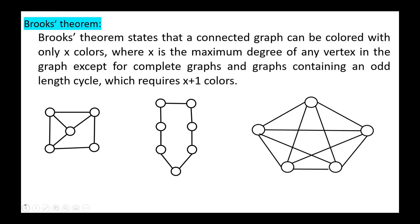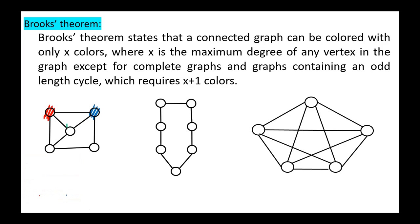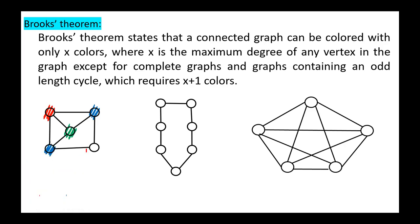Brooks' theorem states that a connected graph can be colored with only X colors, where X is the maximum degree of any vertex in the graph, except for complete graphs and graphs containing an odd-length cycle, which require X plus one colors. For example, coloring this graph: red, blue, green, blue, red — we need three colors. The maximum degree is three, so Brooks' theorem holds. This graph has an odd cycle, so we need three colors; the maximum degree is two, and two plus one equals three.